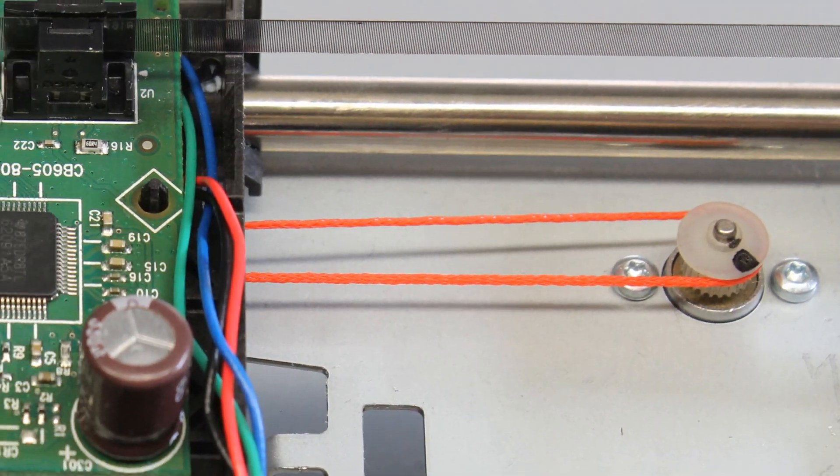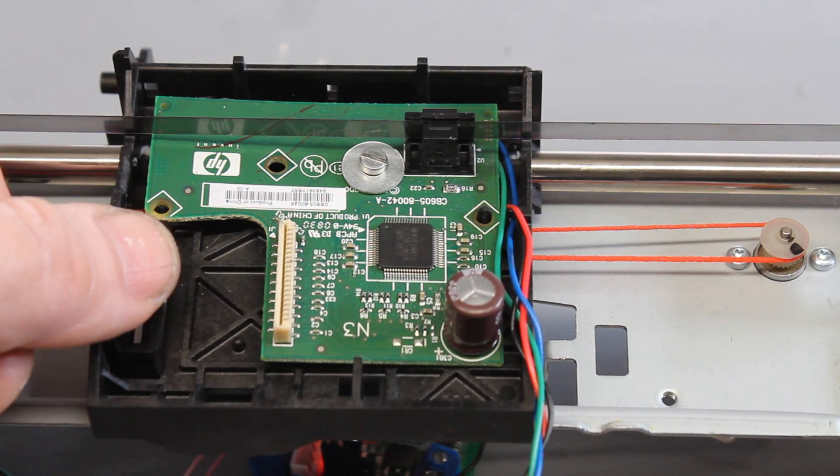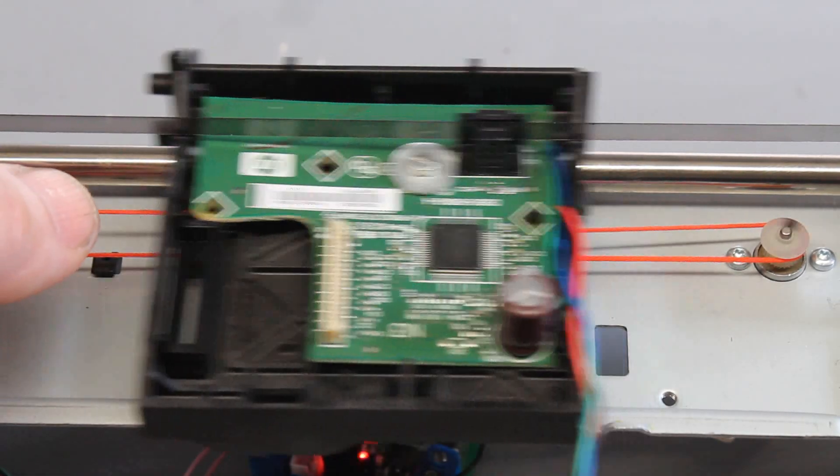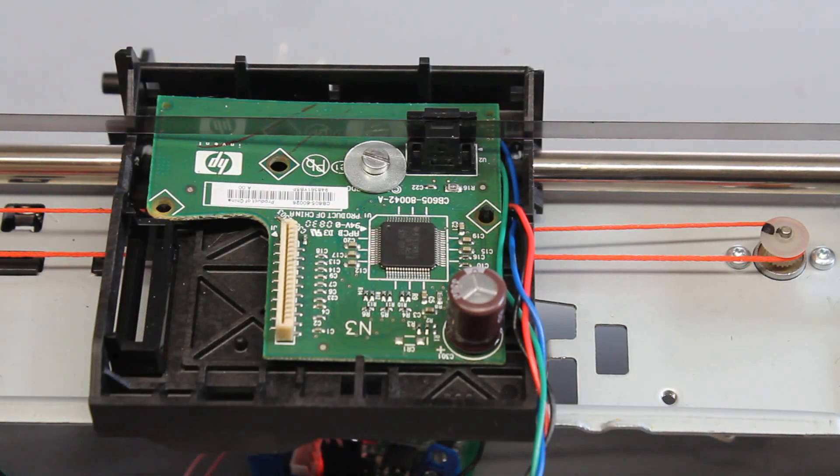Here the toothed belt is replaced by a simple cord. Even while the cord slips along the motor shaft, the microcontroller can still direct the printhead to the given setpoint reliably.